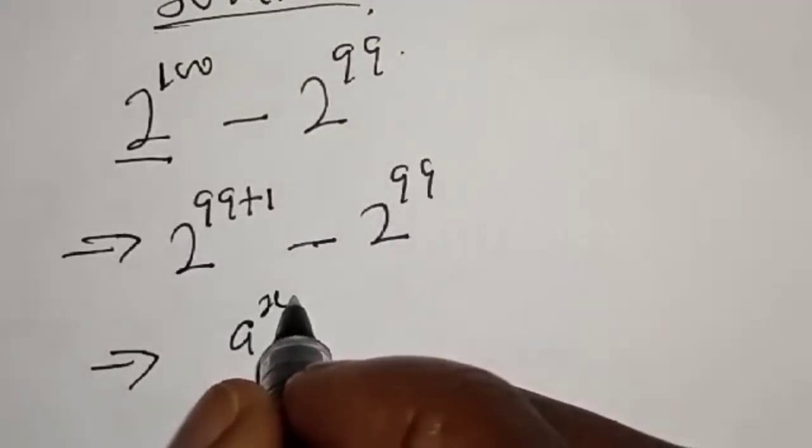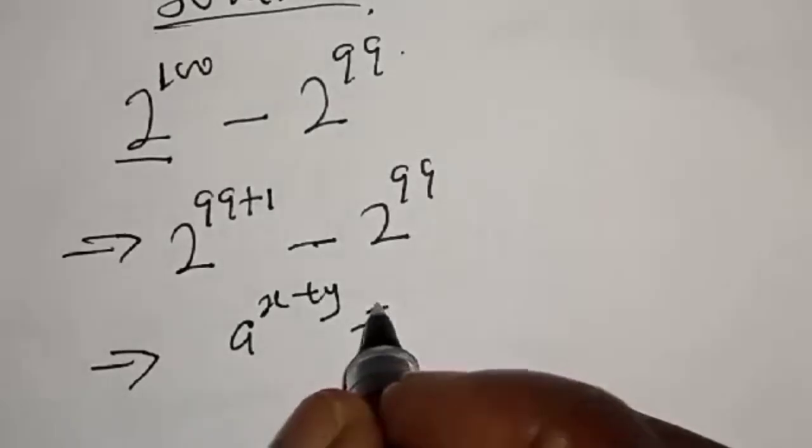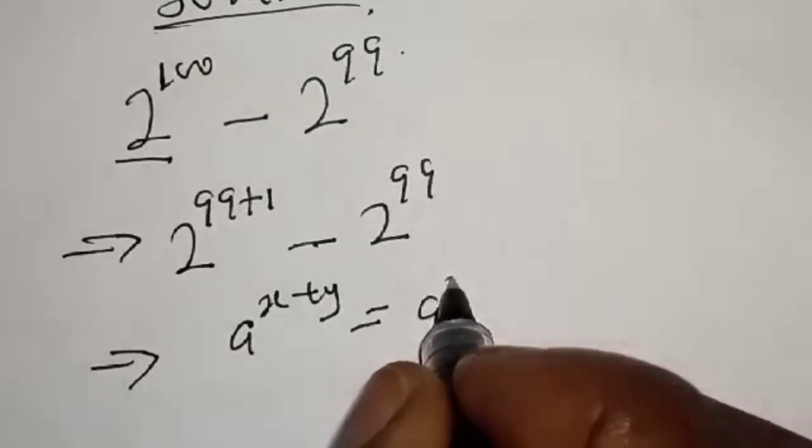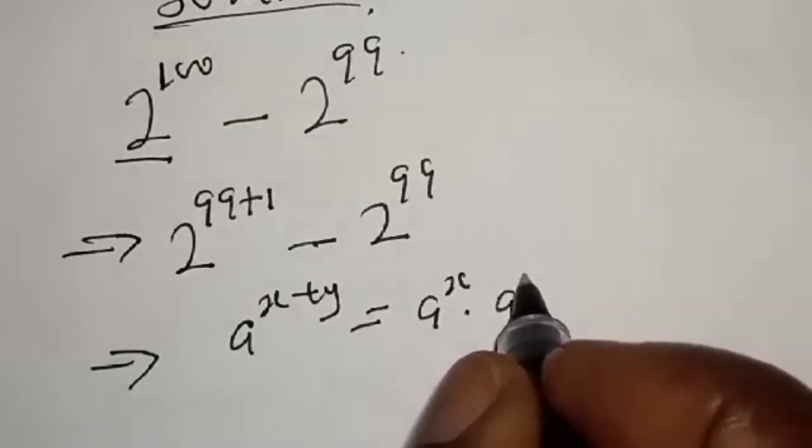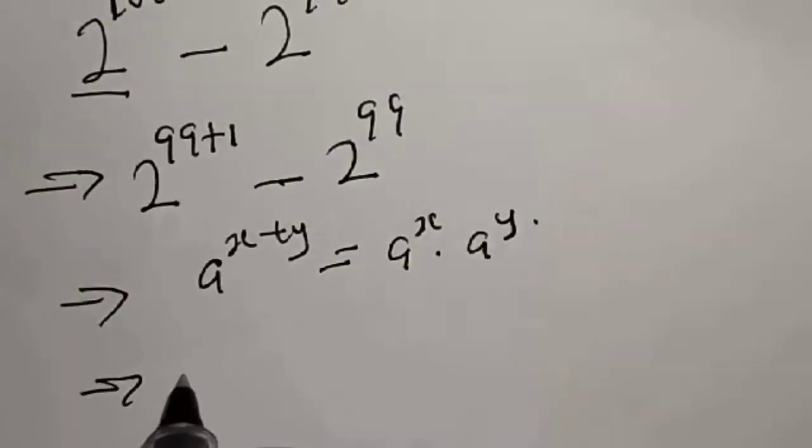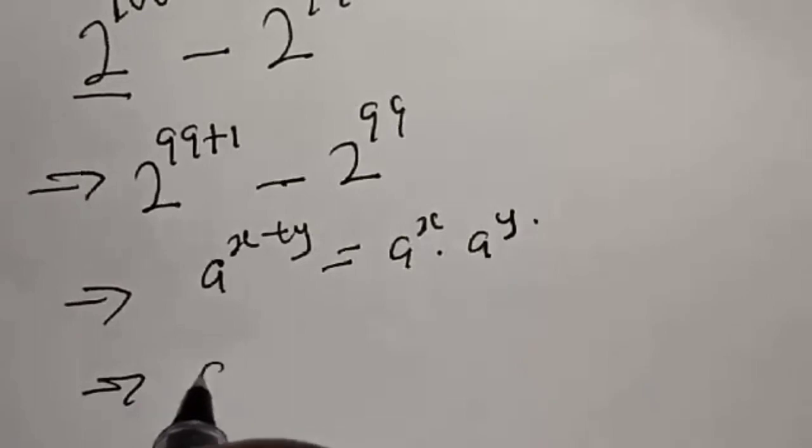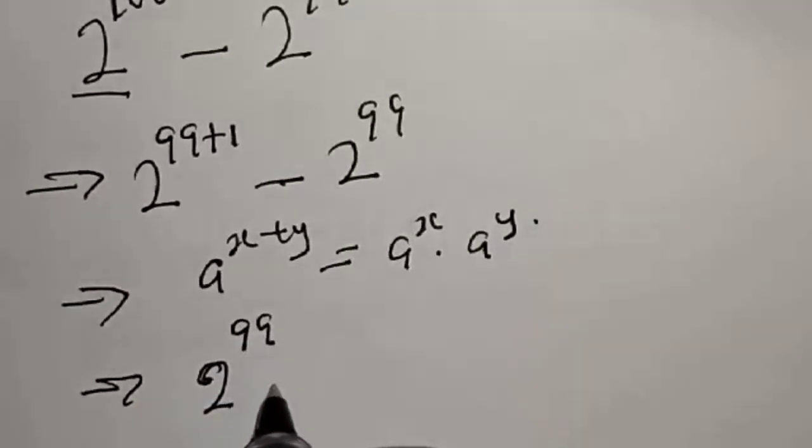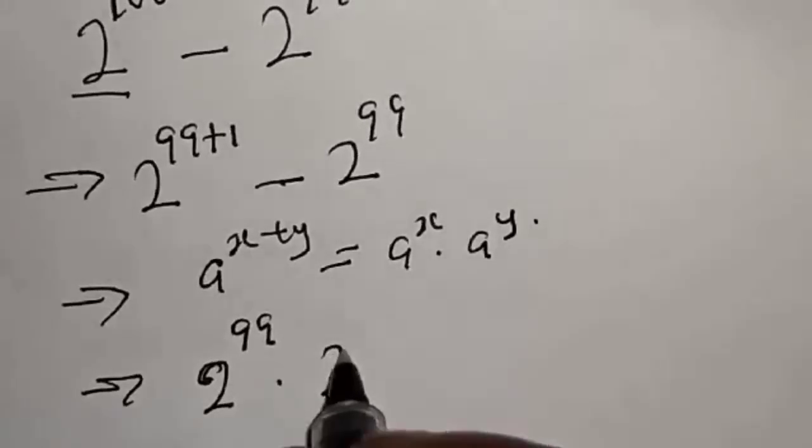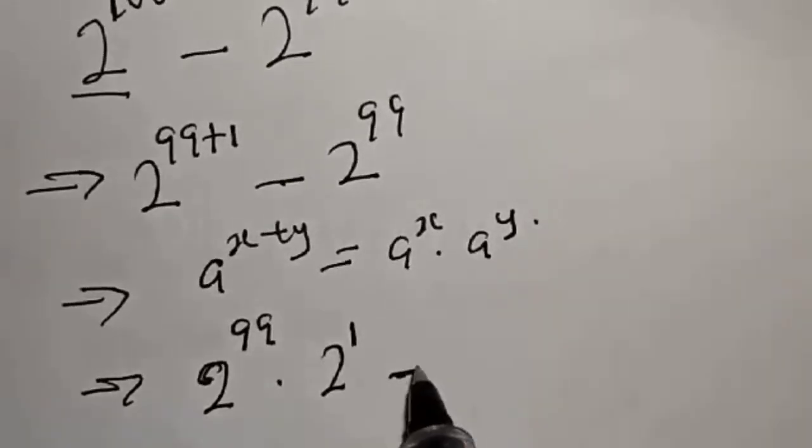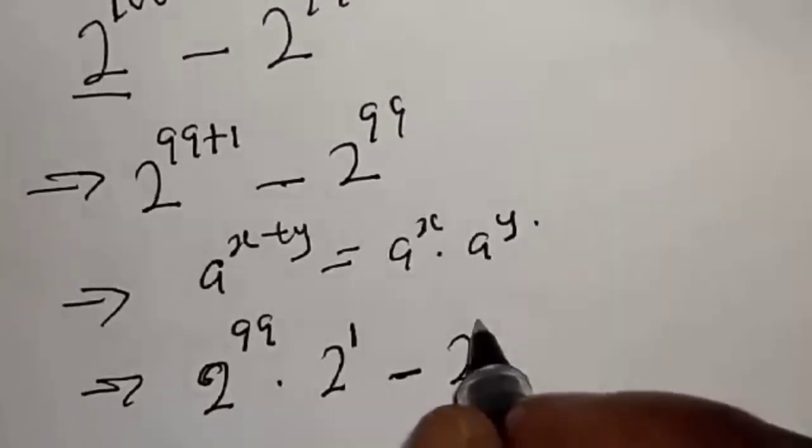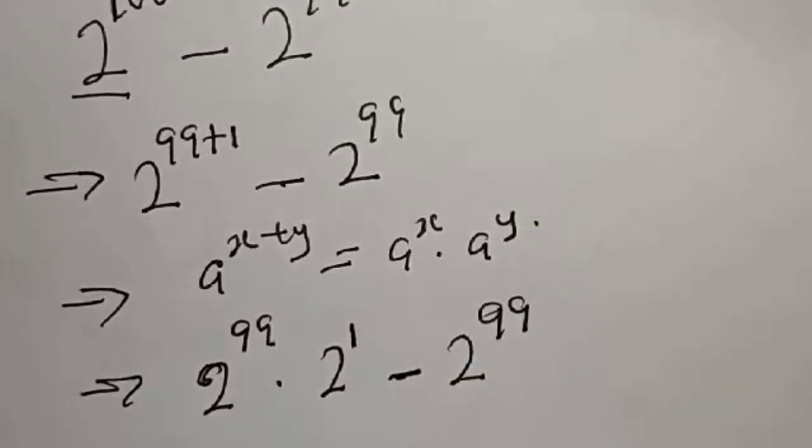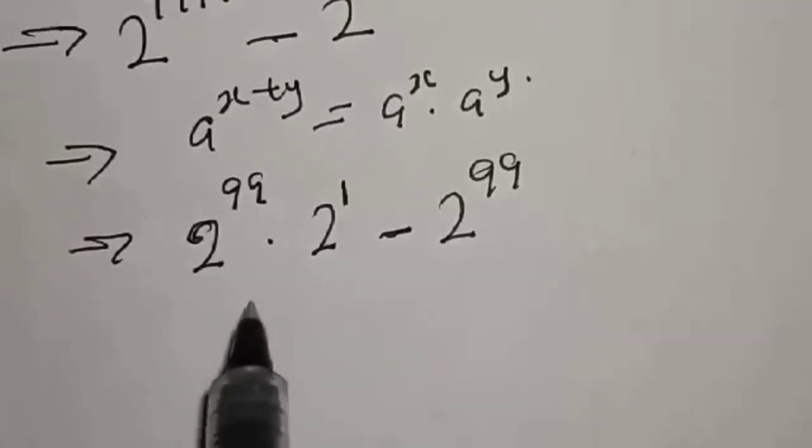If you have a raised to power x plus y, it is equal to a raised to power x multiplied by a raised to power y. So we get 2 raised to power 99 multiplied by 2 raised to power 1 minus 2 raised to power 99.